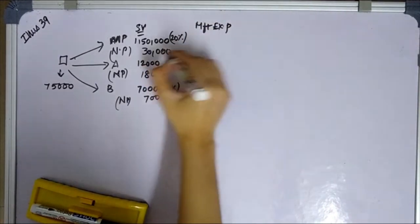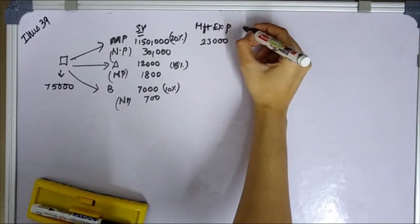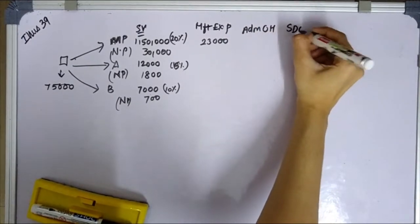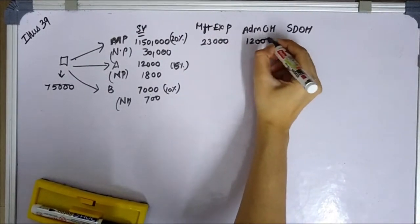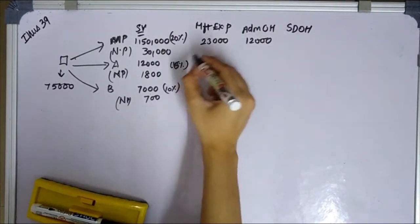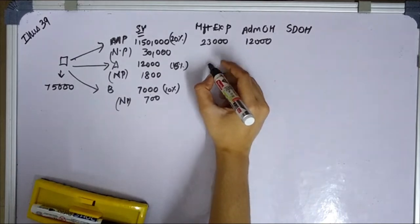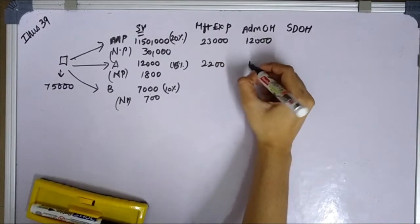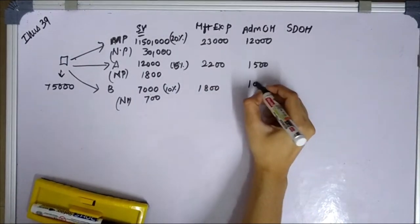Manufacturing expenses after separation for main product is 23,000. Administration overhead: main product is 12,000, by-product A is 1,500, and by-product B is 1,000. Selling and distribution overhead will be applied by percentage.